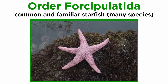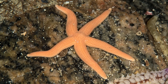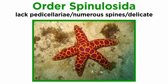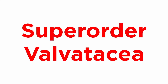Order Forcipulatida includes the common starfish, which are extremely widespread in the Americas. They are some of the most familiar forms of starfish, with many species inhabiting coastal seas and intertidal zones. Members of order Spinulosida completely lack pedicellariae, have numerous spines, and are often quite skeletally delicate.